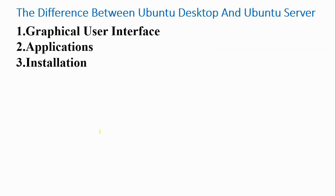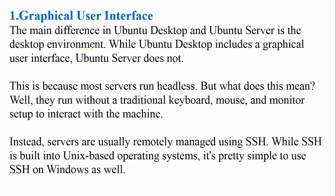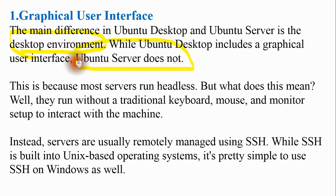Now, the differences between Ubuntu Desktop and Ubuntu Server. There are three main differences: graphical user interface, applications, and installation. Regarding the GUI: the main difference is the desktop environment. Ubuntu Desktop includes a graphical user interface — as seen in the desktop installation I showed in my previous video — but Ubuntu Server does not, because most servers run headless, without the traditional keyboard, mouse, and monitor setup.